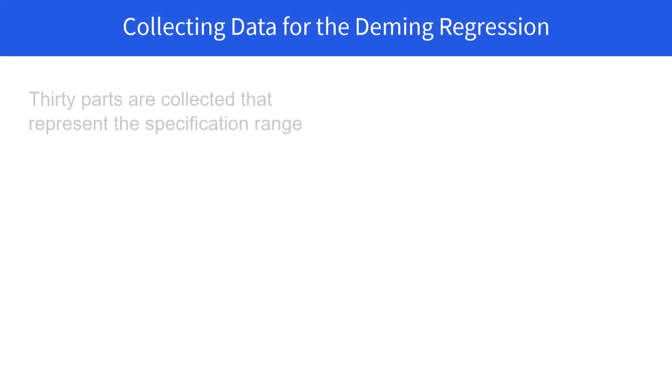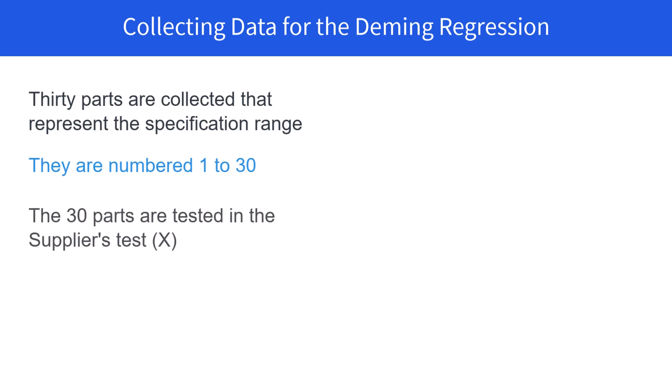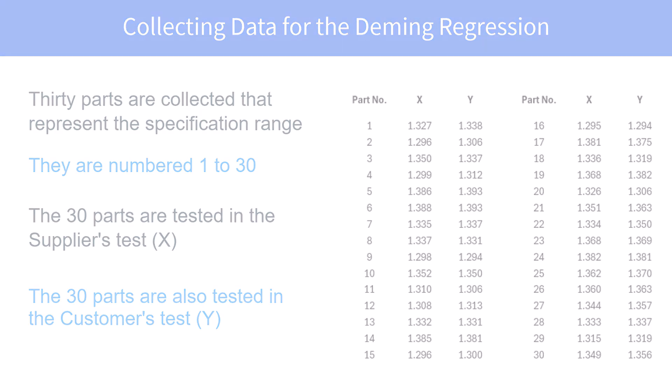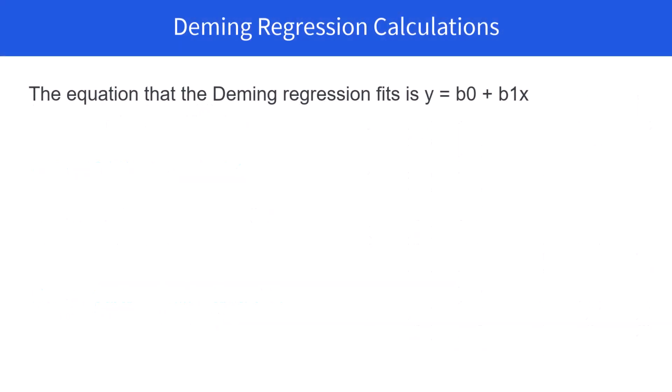Now we're ready to collect the data for the Deming regression. 30 parts are collected that represent the specification range. Number them from 1 to 30. Test those 30 parts in the supplier's test. And then you test the same 30 parts in the customer's test. This gives you 30 paired measurement samples between the customer and the supplier. And you're ready to begin your calculations.